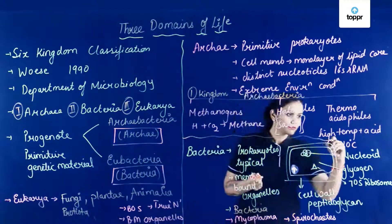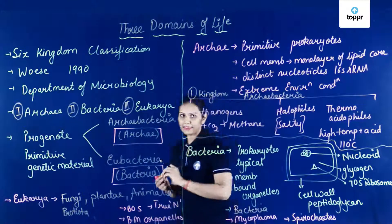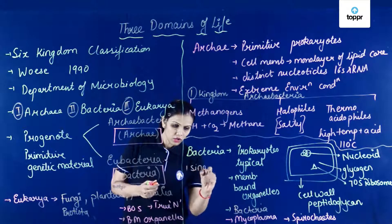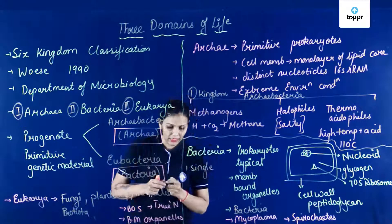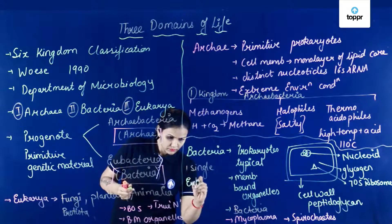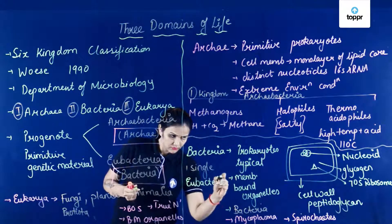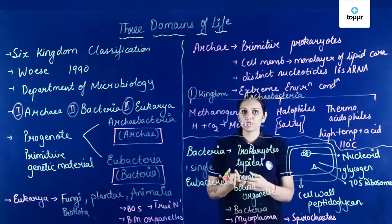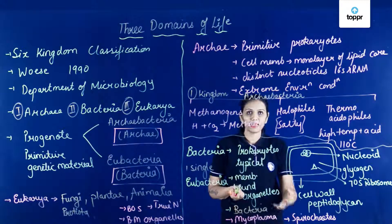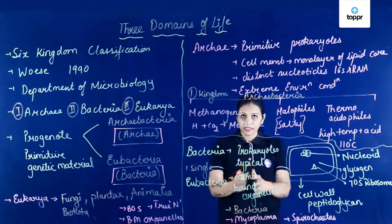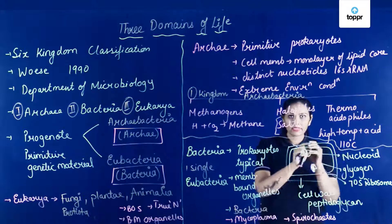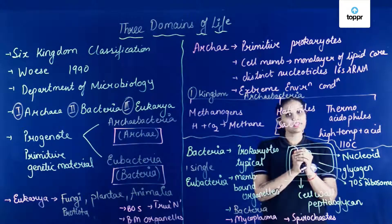Now let's talk about the domain Bacteria. Bacteria domain ke andar bhi there is only a single kingdom, and that single kingdom is called as the Eubacteria. Iske andar koun koun aate hai? Spirochetes, Mycoplasma, Actinomycetes, Cyanobacteria. Ye sab iske andar aate hai. Distinguishing features kya hai? Cell wall made up of peptidoglycan. Naked DNA. Membrane bound organelles absent hai. 70S type of ribosome hai. And the reserve food material is glycogen.